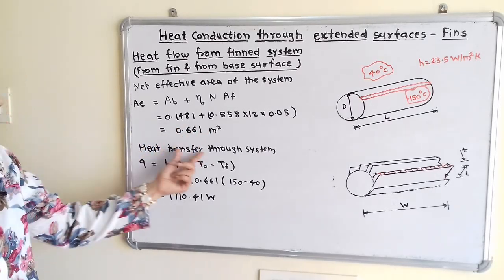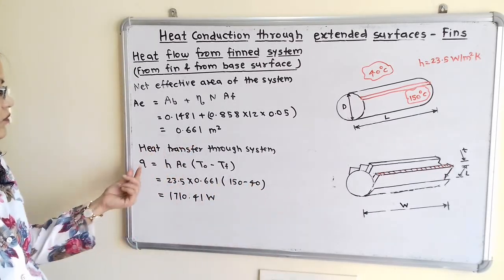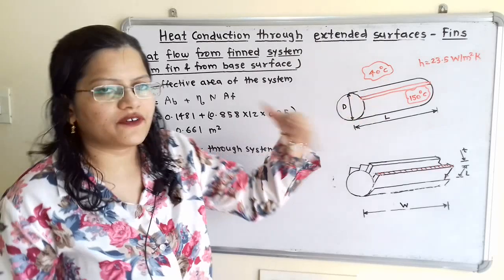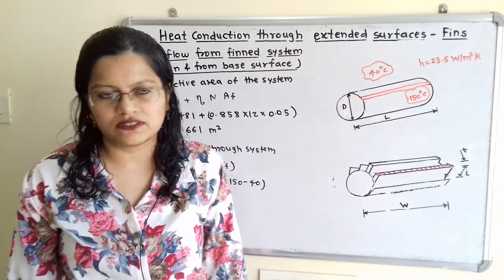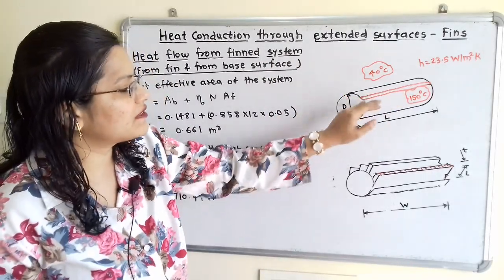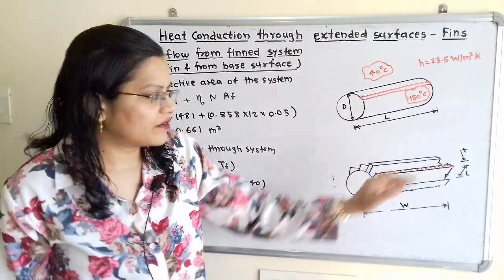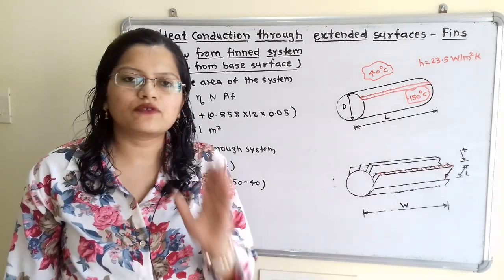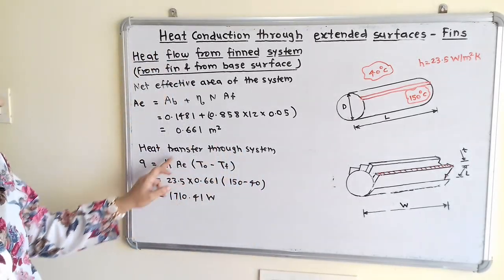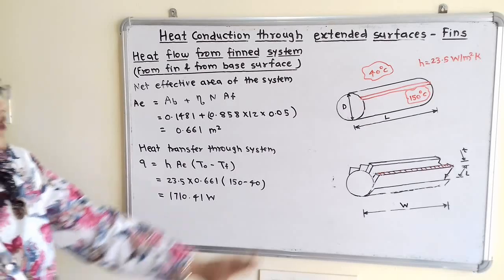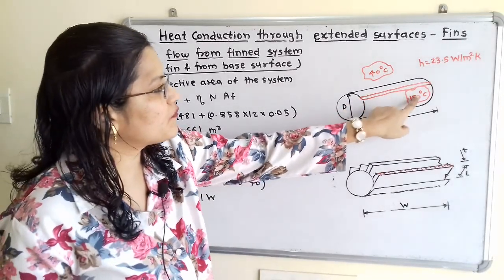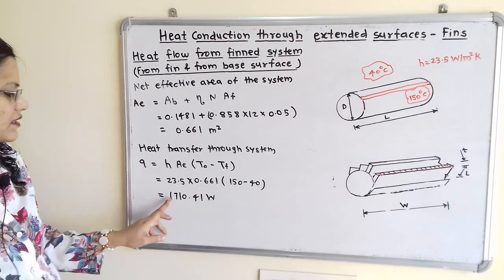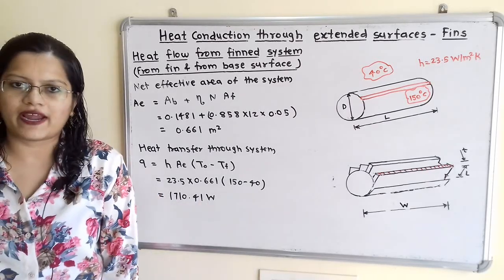Finally, the total heat transfer through the system Q is calculated using convection from the cylinder surface and fins: Q = H × A_effective × ΔT = 23.5 × 0.661 × (150 − 40) = 1710.41 W.